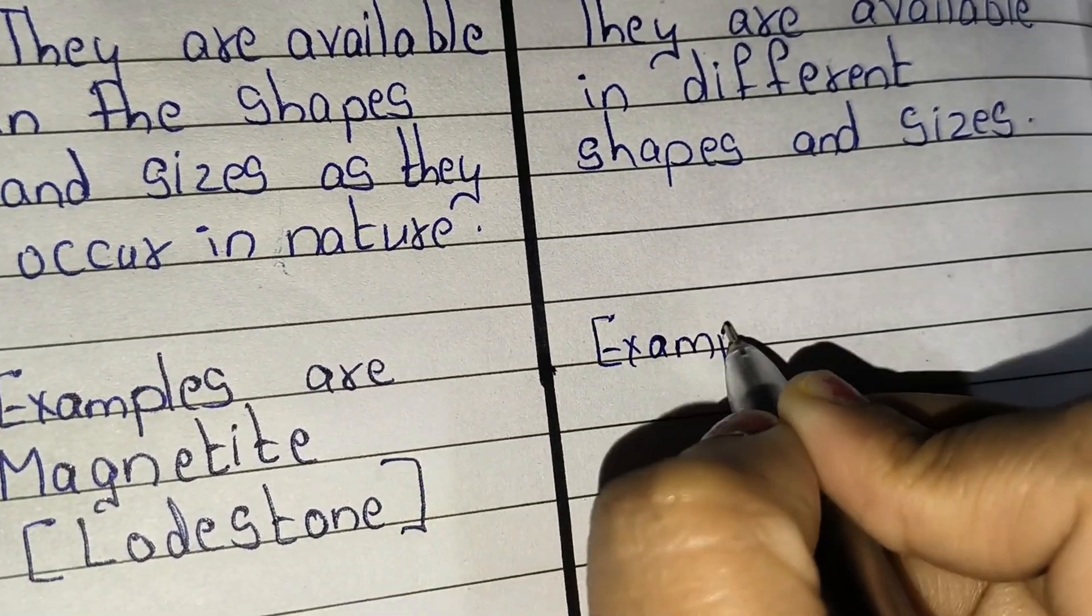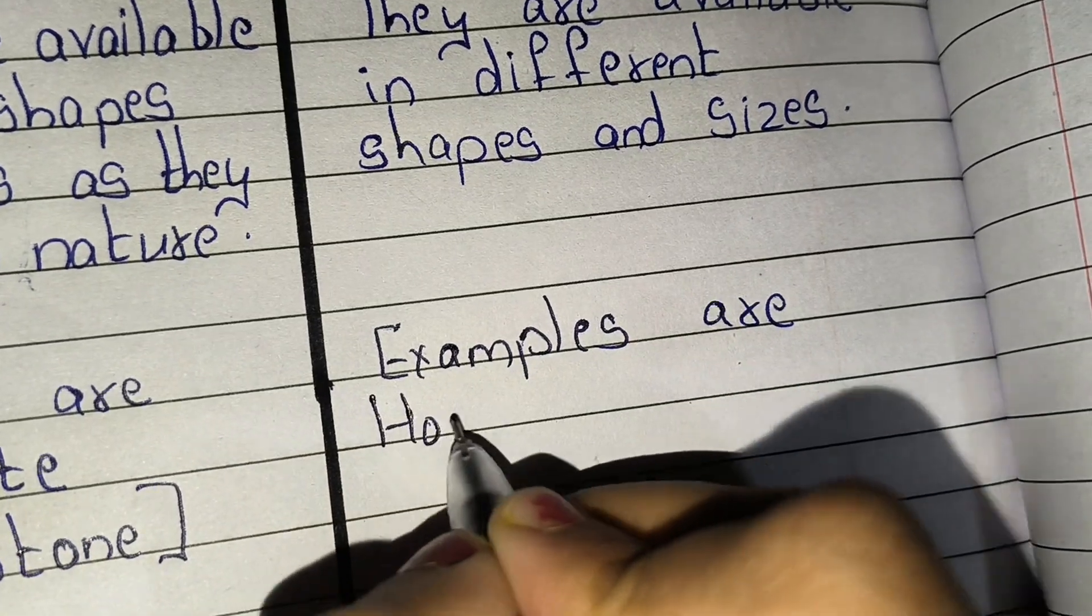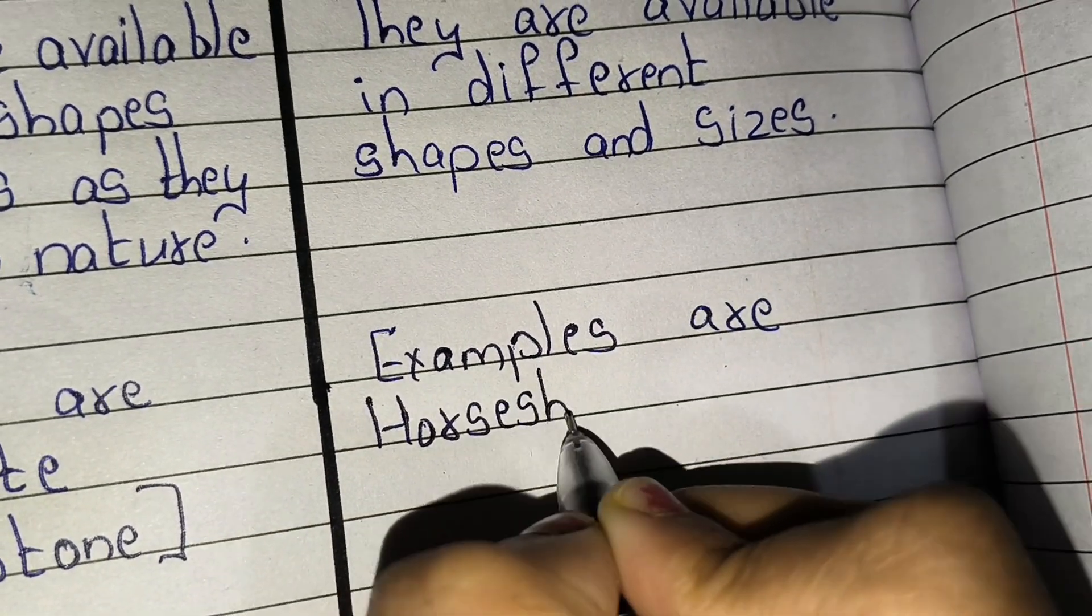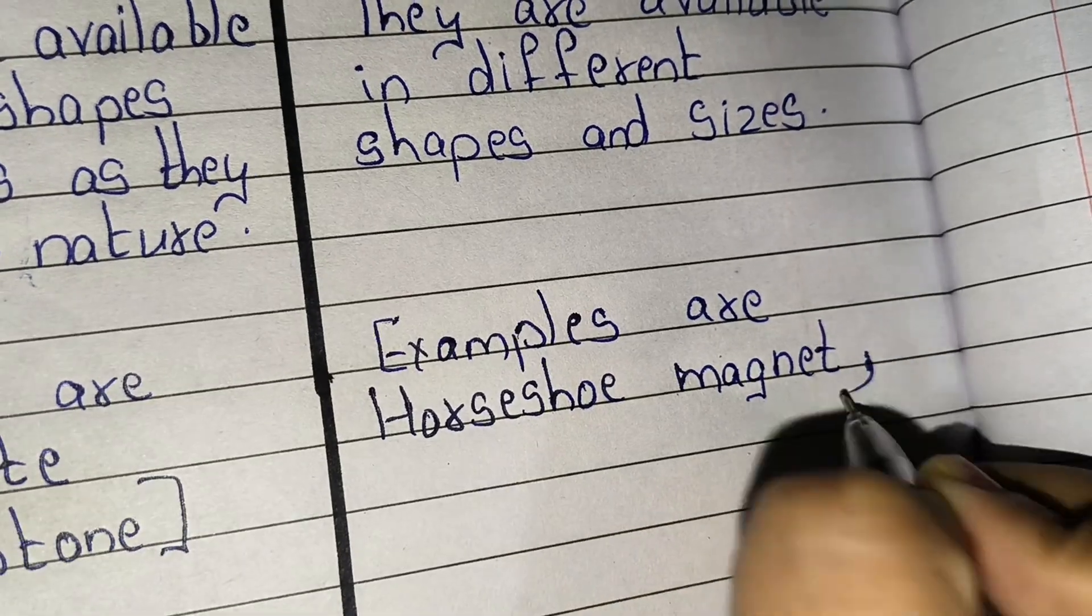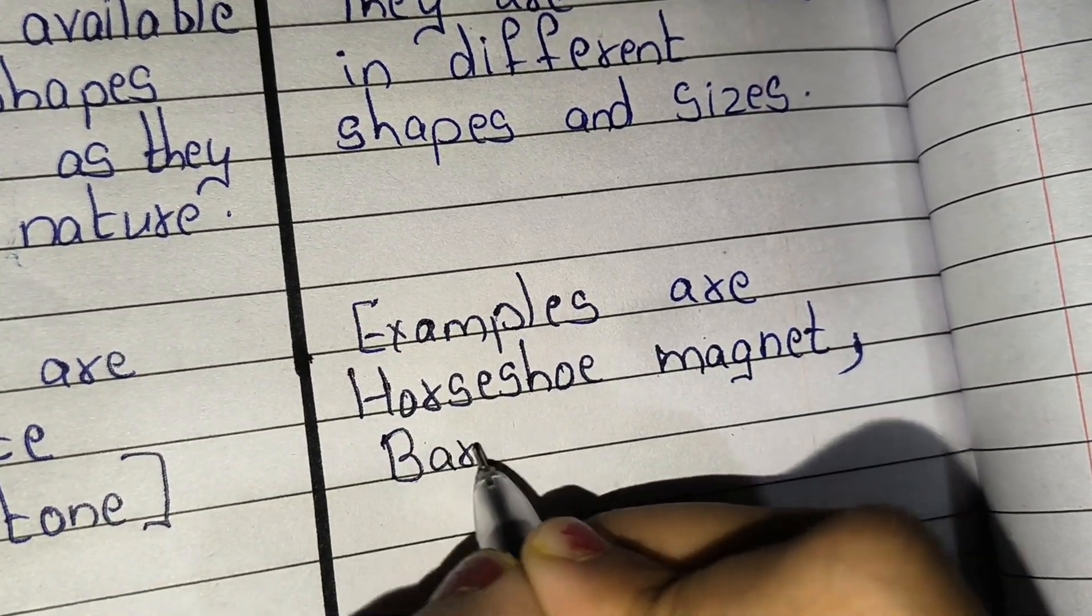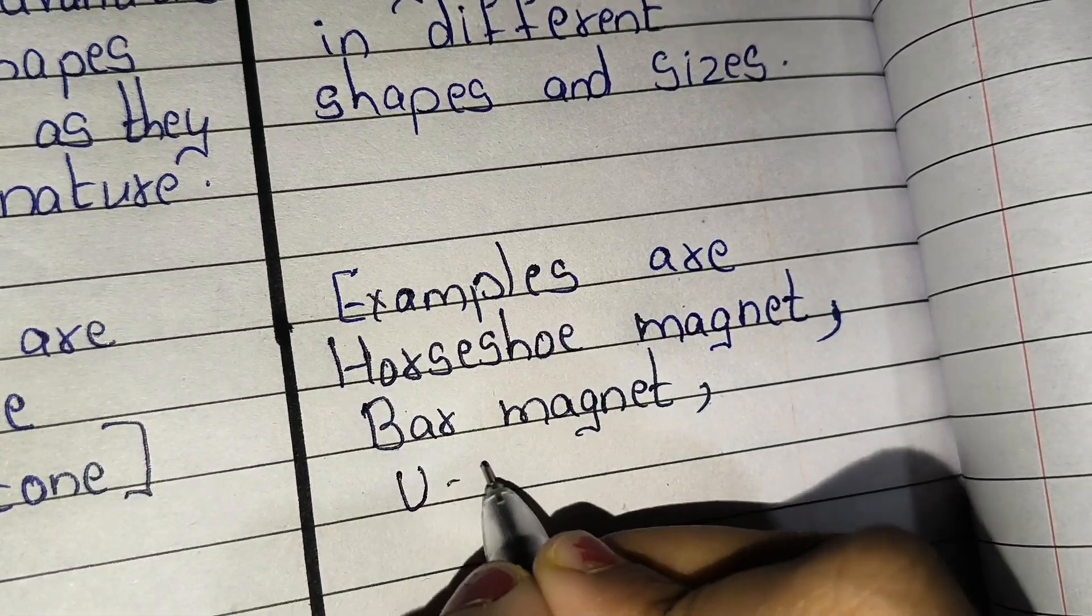Examples of artificial magnets are horseshoe magnet, bar magnet, U-shaped magnet, etc.